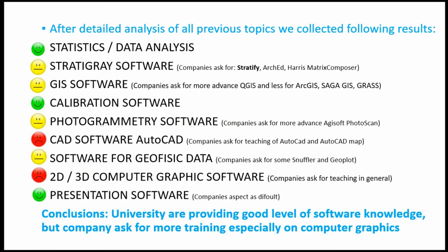After analyzing the collected data, I prepared a category graph using a color-coded system: green means there is agreement between companies and universities, red means disagreement, and yellow indicates a middle situation.